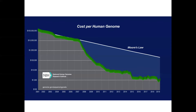This slide shows the cost of genome sequencing. In the early 2000s, sequencing a complete human genome cost about $100 million. Costs dropped significantly starting from 2007 when next generation sequencing became available. By 2020, the cost was about $1,000 per sample — much, much less.